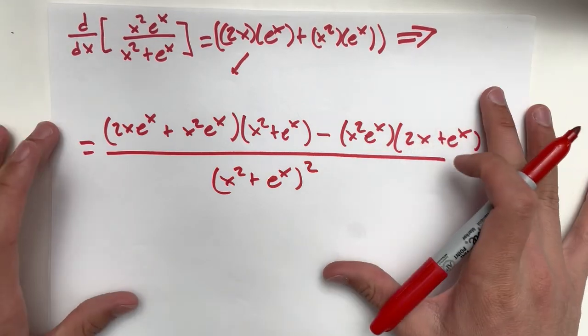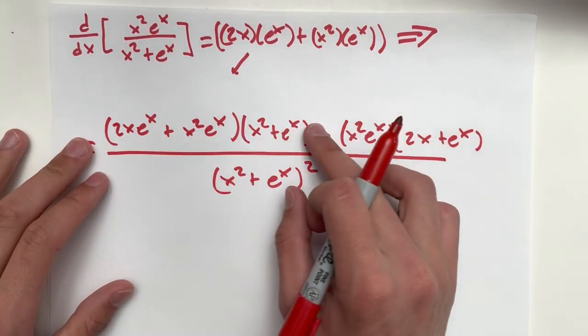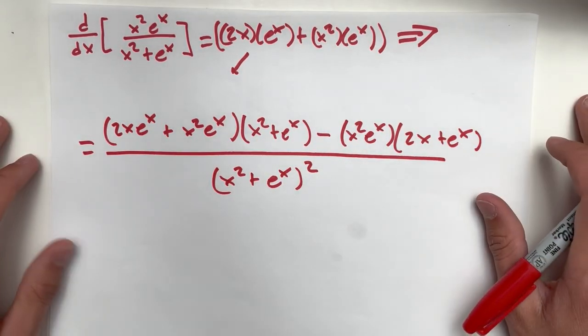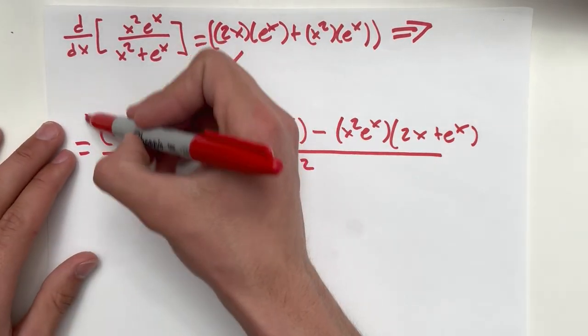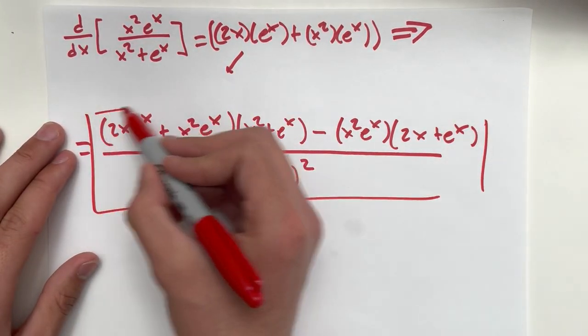And you could keep simplifying with this. We could foil and distribute this. If this was a simpler problem, I would. But for our purposes, this is the solution.